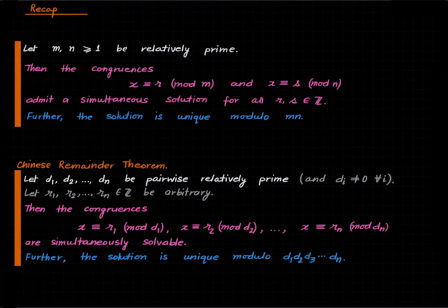Welcome to this lecture series in number theory. Last time we stated and proved the Chinese remainder theorem, and I have written the general statement here just for recollection. In this lecture we'll take an alternate viewpoint to the same theorem. We will restate it in a different way and reprove it.